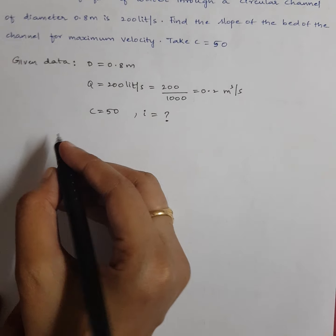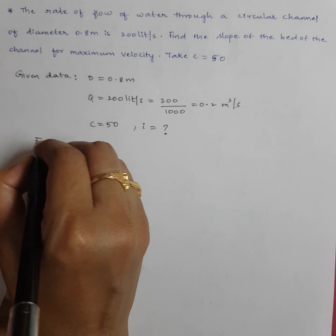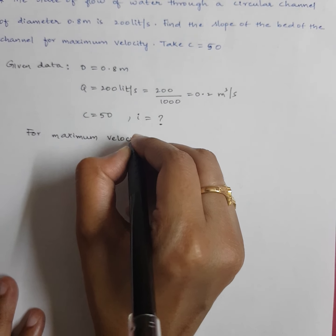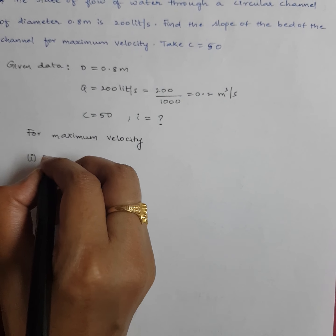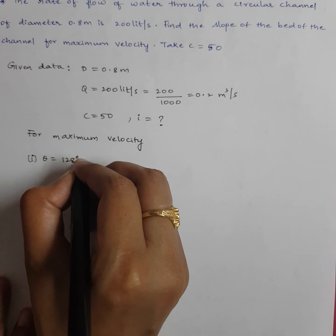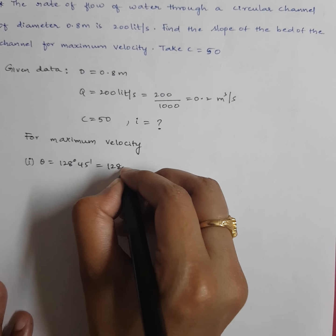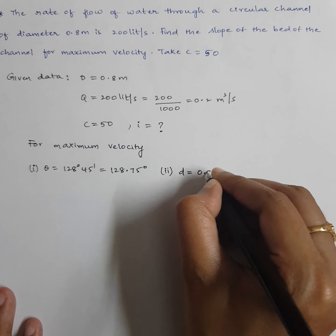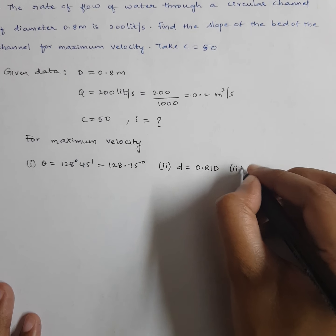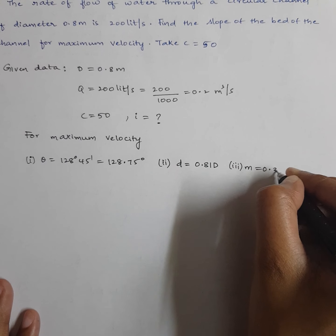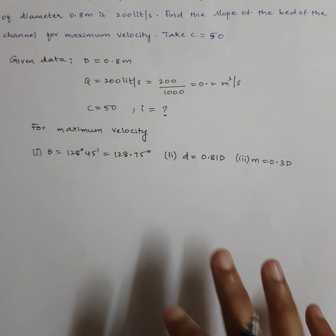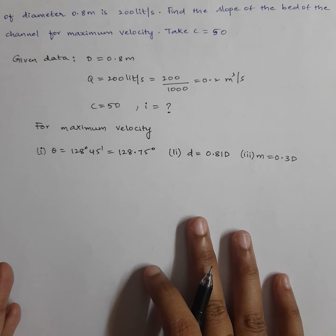For maximum velocity, the three conditions are: (1) θ equals 128°45' equals 128.75°, (2) depth of flow d equals 0.81D, and (3) hydraulic radius M equals 0.3D. Using these conditions: d equals 0.81 into 0.8 equals 0.648 meters, and M equals 0.3 into 0.8 equals 0.24 meters.